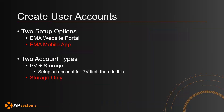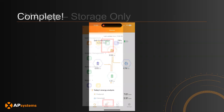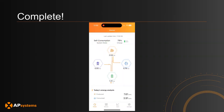For the final option — using the mobile app to add a storage-only user — go to the home page, then Workspace, and select Add Storage User. Follow the instructions on the remaining pages to add the storage user, which will include entering the ECU ID of the storage device. The end user will then receive credentials to log into the EMA mobile app or website to view system information on their AP storage solution.